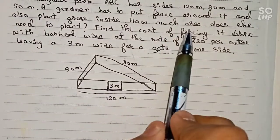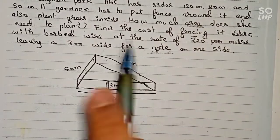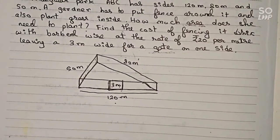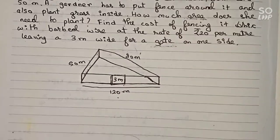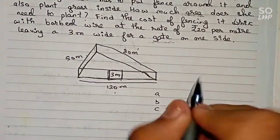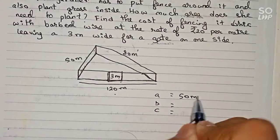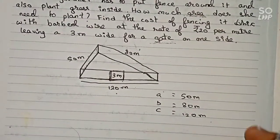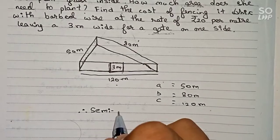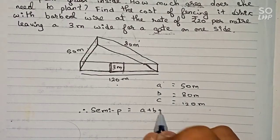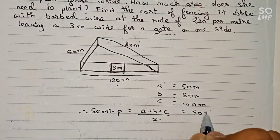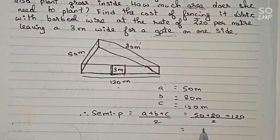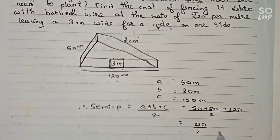First, for the area, we don't need to subtract anything — we use only 50, 80, and 120 with Heron's formula. So a, b, and c, the three sides: a equals 50 meter, b equals 80 meter, and c equals 120 meter. Now we find the semi-perimeter. Semi-perimeter s equals a plus b plus c divided by 2, so 50 plus 80 plus 120 by 2. That is 200 plus 50 = 250, divided by 2 = 125. Semi-perimeter is 125 meter.